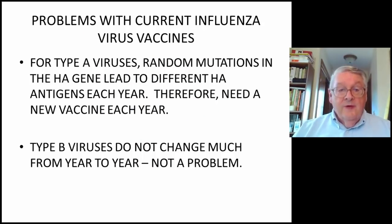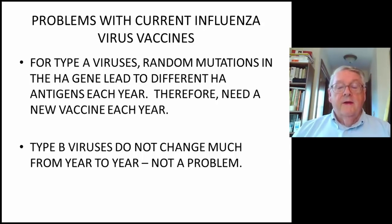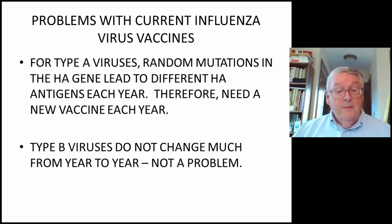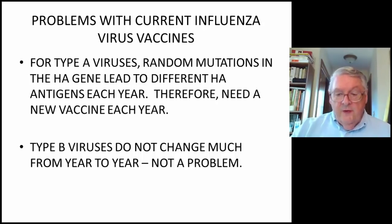Problems with current influenza vaccines: for type A viruses, random mutations in the HA gene lead to different HA antigens each year; therefore, a new vaccine is needed each year. It's very expensive to make and also hit or miss — in 2015 the vaccine was only about 30% effective, and a few years ago they had a vaccine that didn't work at all. Type B viruses do not change much from year to year, so that is not a problem.